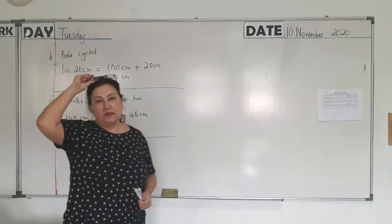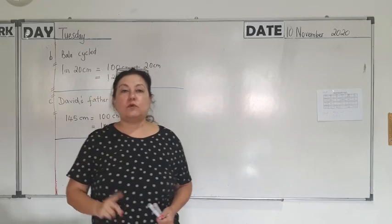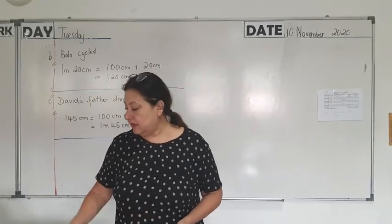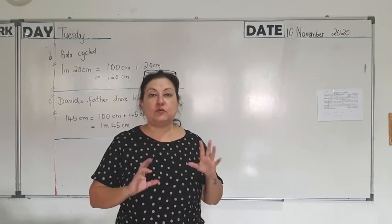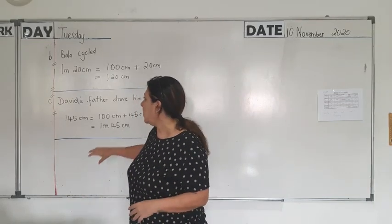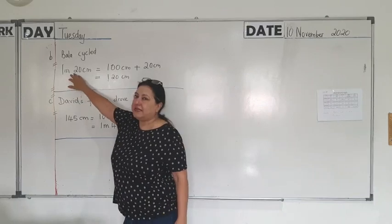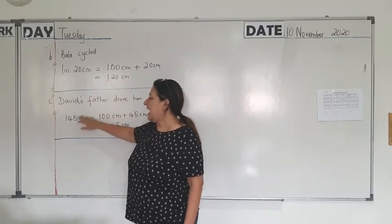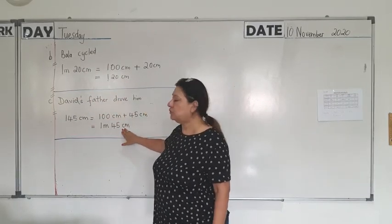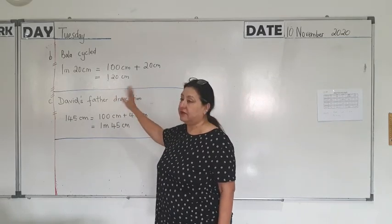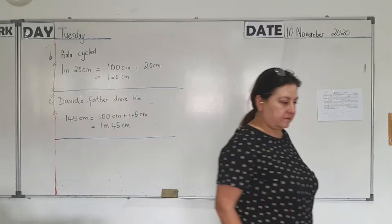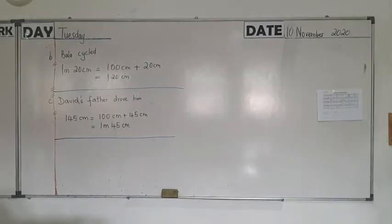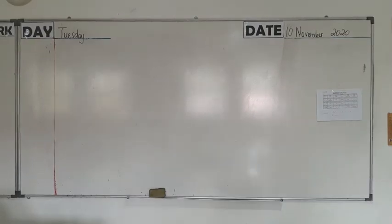So what you must understand, 1 metre is equal to 100 cm. You must remember this conversion. 1 metre is equal to 100 cm. So we are converting from metres to cm and from cm to metres. We are converting both ways.